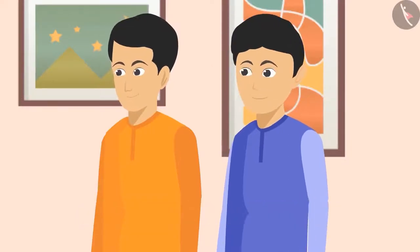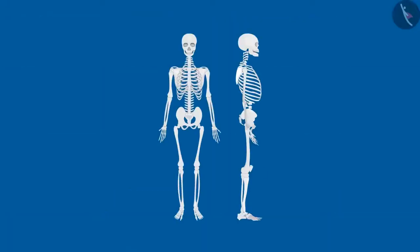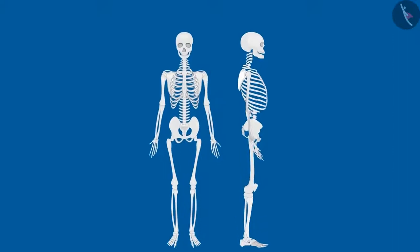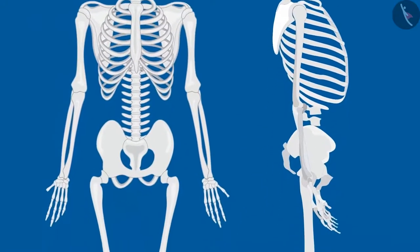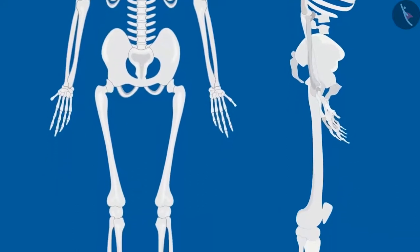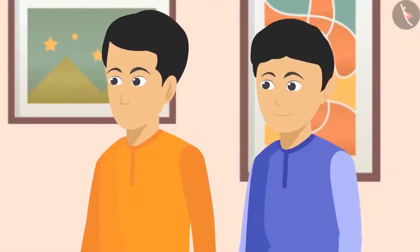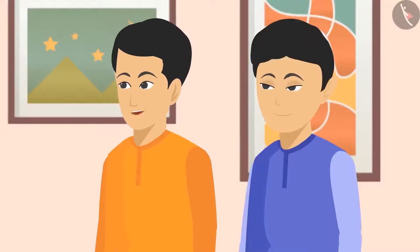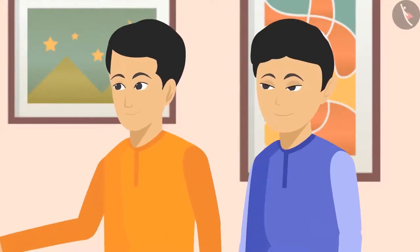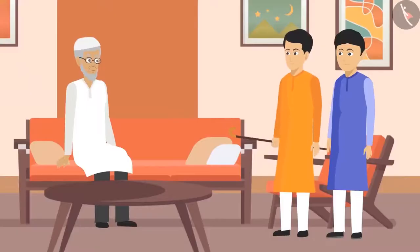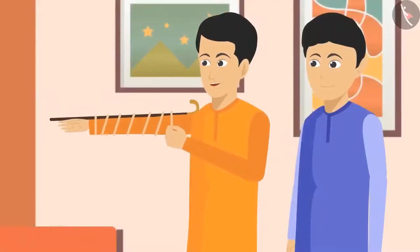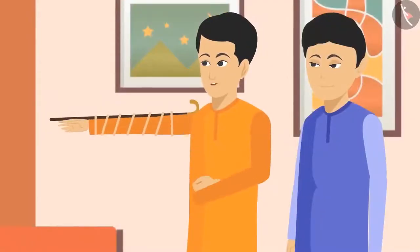'Chacha ji, the basic structure of our bodies is made up of bones. These bones are very hard and strong. They are not flexible, which is why we can't bend them. I will explain it with the help of this stick — if I tie the stick to my shoulder, I won't be able to bend my hand at all.'